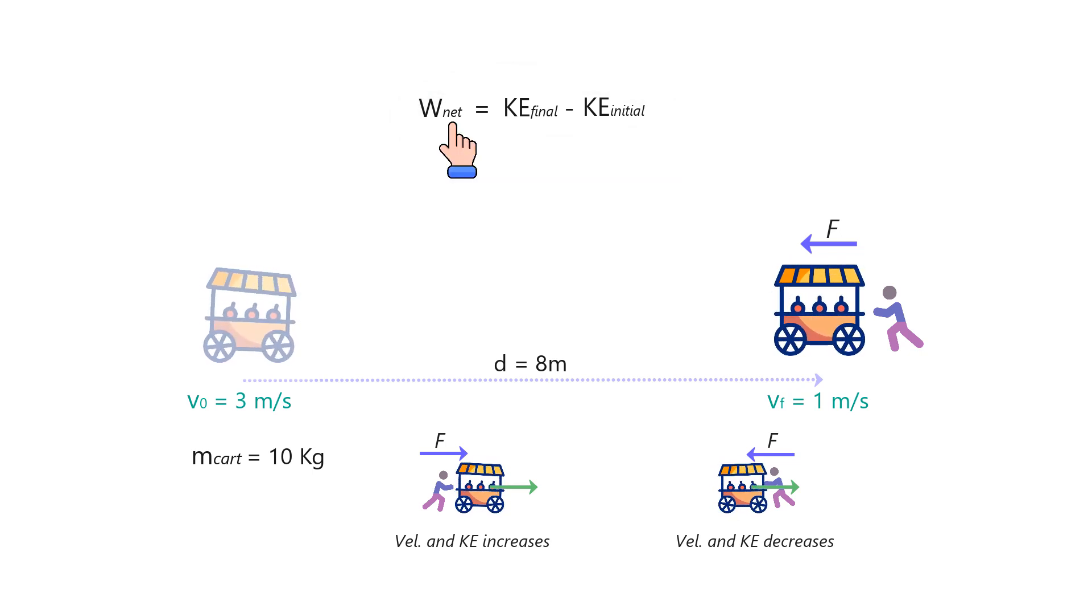So, if there is more than one force acting on the object, you should first calculate the net force by adding up all the forces vectorially and then using that net force to calculate the work done on the object. You could also calculate the work done by each force and add them up to get the net work done.